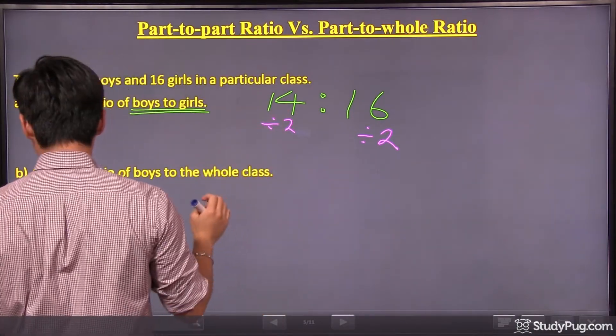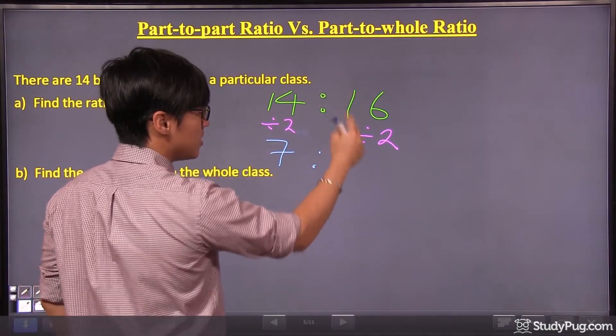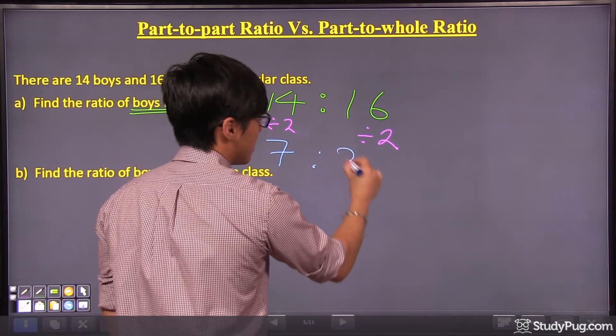Alright, so 14 divided by 2, we get 7. 16 divided by 2, we get 8.